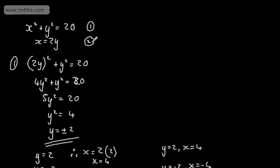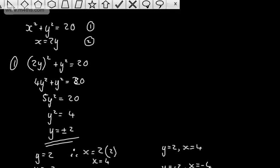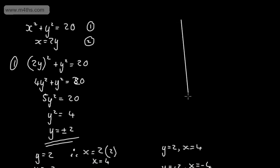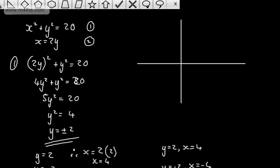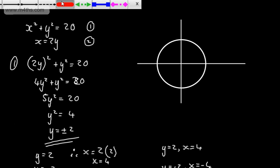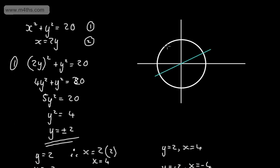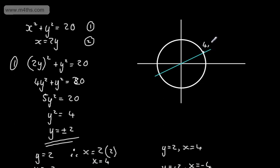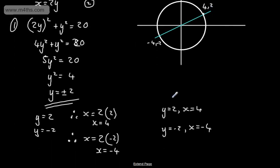We've solved for a circle and a line. Sketching this: the circle has centre (0, 0) and radius equal to the square root of 20, and the line is y equals one half x, or equivalently x equals 2y. The points of intersection are (4, 2) and (−4, −2). So if asked for the coordinates, those are your answers. If asked for the solutions: x equals 4 when y equals 2, and x equals minus 4 when y equals minus 2.